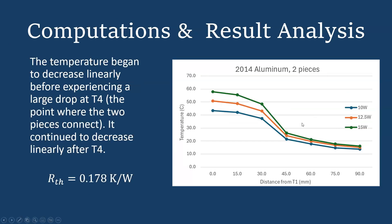And for the two pieces, you can see that as distance from T1 increases, the temperature does not increase linearly because of the two pieces of aluminum. It begins to decrease, and then here it experiences a drop from T3 to T5 in temperature because of the two pieces of metal where they meet, and then it continues to decrease almost linearly after that.